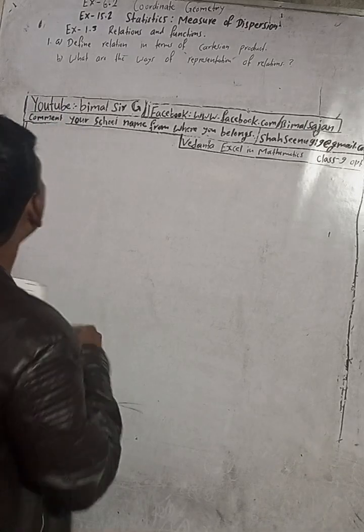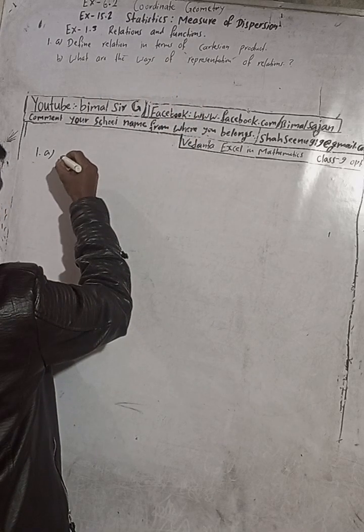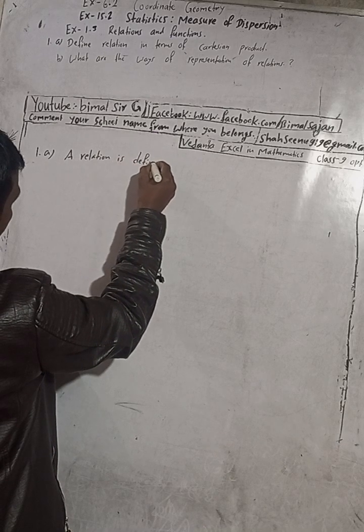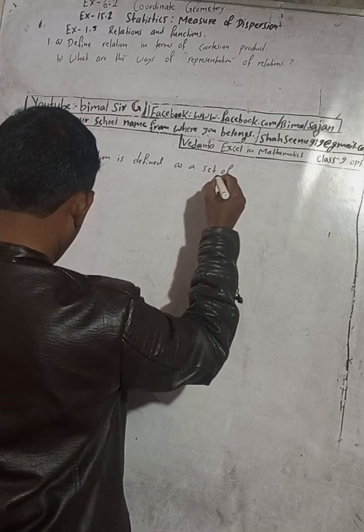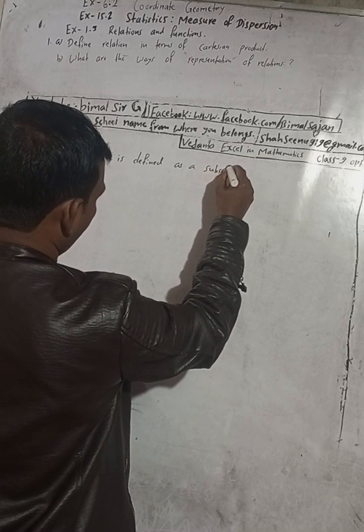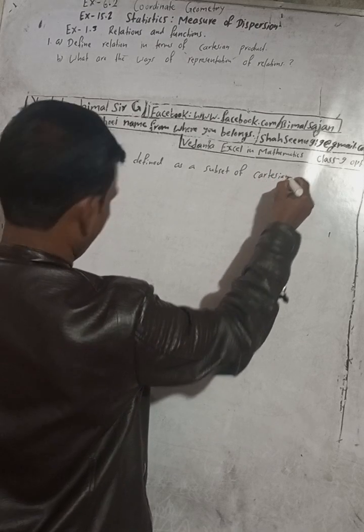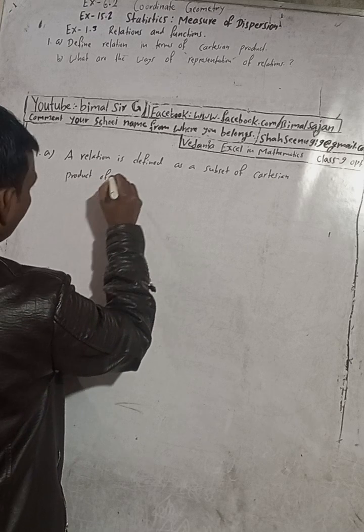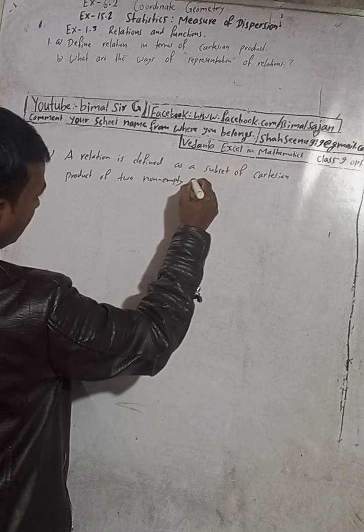Now here the question is, in part (a), define relation in terms of cartesian product. So a relation is defined as a set of, a relation is defined as a subset of cartesian product of two non-empty sets.